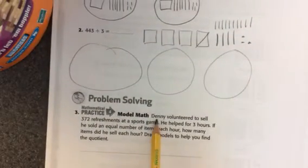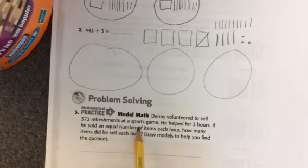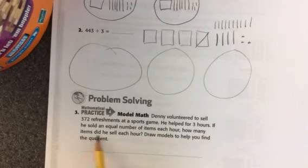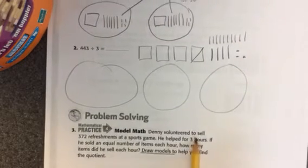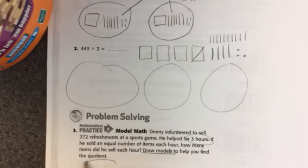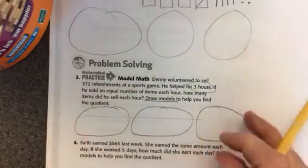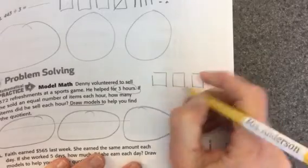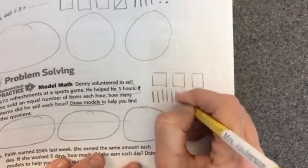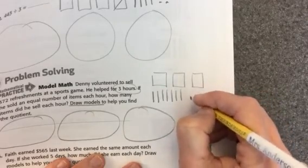All right, let's look at this one. Denny volunteered to sell 372 refreshments at a sports game. He helped for three hours. If he sold an equal number of items each hour, how many items did he sell each hour? Draw models to help you find the quotient. Three hours means we're going to have three groups and we need 372. So I'll do three hundreds and seven tens and two ones. And then I'll divide it into these groups to find the answer.